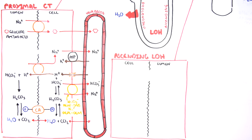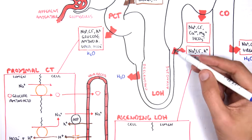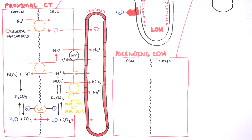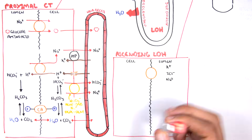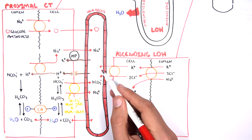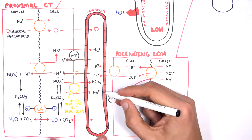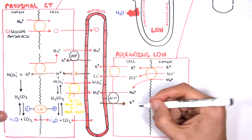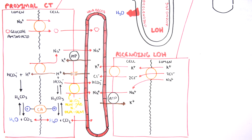Other electrolytes are also reabsorbed in the proximal convoluted tubule, including calcium ions — the majority of calcium is reabsorbed here. In the ascending loop of Henle, electrolytes are reabsorbed via a cotransporter that brings in one potassium, two chloride, and one sodium back inside the cell. Potassium and chloride then go through another cotransporter back into circulation, while sodium gets exchanged for potassium through the sodium-potassium ATPase — again on the basal surface of the cell.